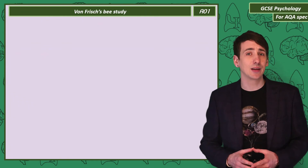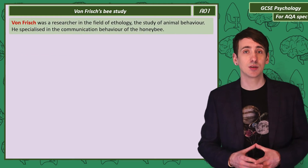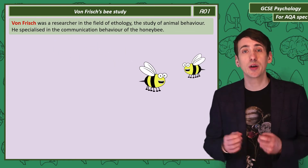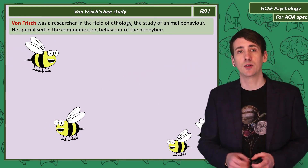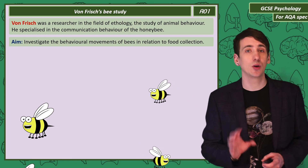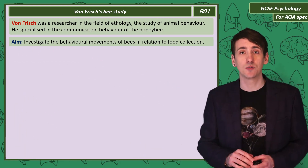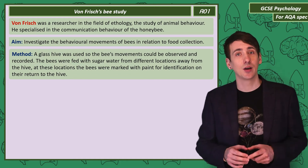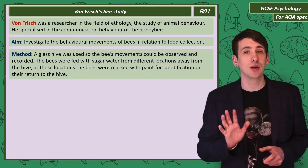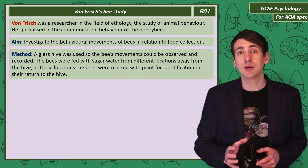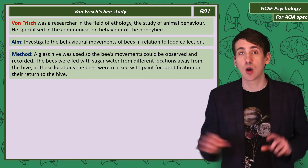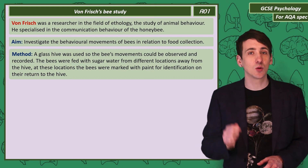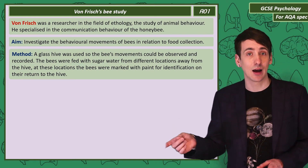You might not expect insects to have much of a communication system, but a researcher called Von Frisch shared the Nobel Prize for his work on honey bee communication. Von Frisch's aim was to investigate how honey bees communicate the location of food through movement. His method was to construct a glass beehive so he could observe and record the bees' movements. He fed the bees sugar water from locations away from the hive, and when the bees visited those locations he marked them with paint so they could be identified back at the hive.